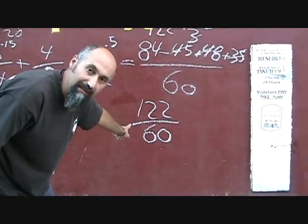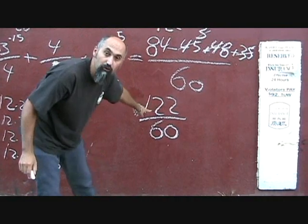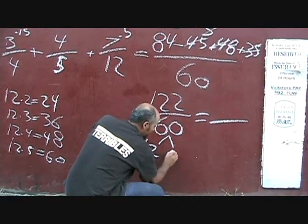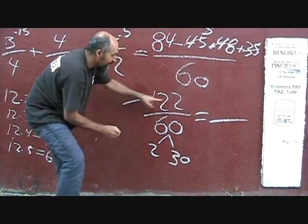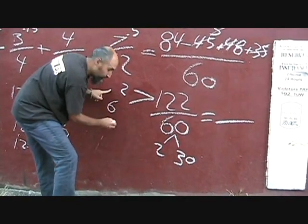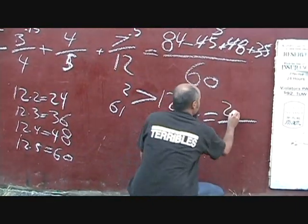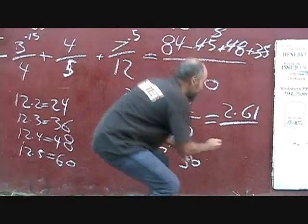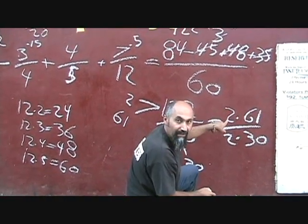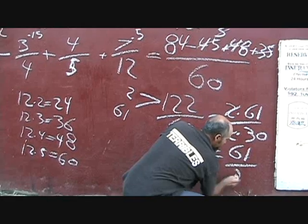So all of this turns out to be 122 over 60. Now you cannot leave it like that. You have to break that down into its lowest form. Now they're both even, so you know 2 goes into these. So 60, if you break this down, it becomes 2 times 30. If you break down 122, 2 goes into 12 six times, 2 goes into 2 once. So 2 times 61 is 122. So what we've got here is 2 times 61, and we've got 2 times 30 in the bottom. Anything from the top can cancel out anything from the bottom. So 2 kills 2. So your final answer is 61 over 30.